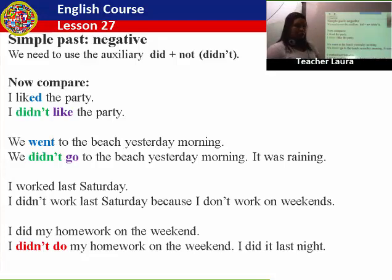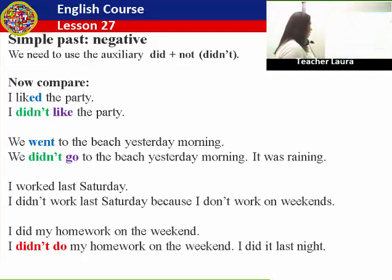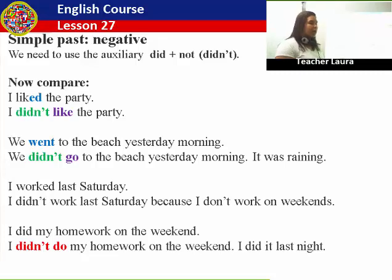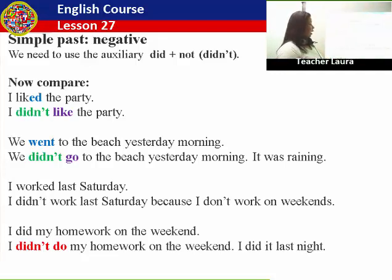Now, see this sentence with attention. I did my homework on the weekend. I didn't do my homework on the weekend. I did it last night. Pay attention — in this sentence, my main verb is the action 'to do'. To do the homework is my action. If I change it into negative, I have to use 'didn't', and I can't forget to put my action again: I didn't do my homework, because it's in the negative. I did my homework on the weekend. I didn't do my homework on the weekend. I did it last night.